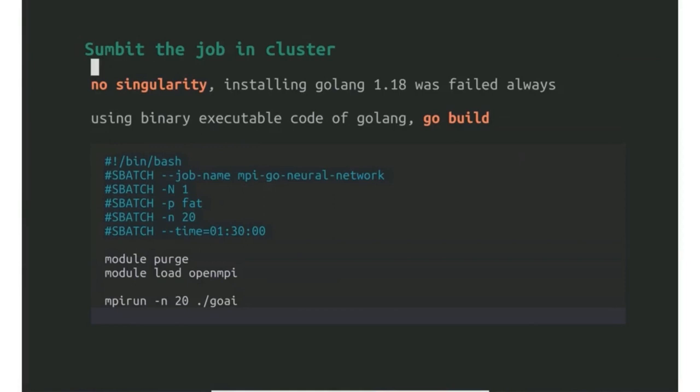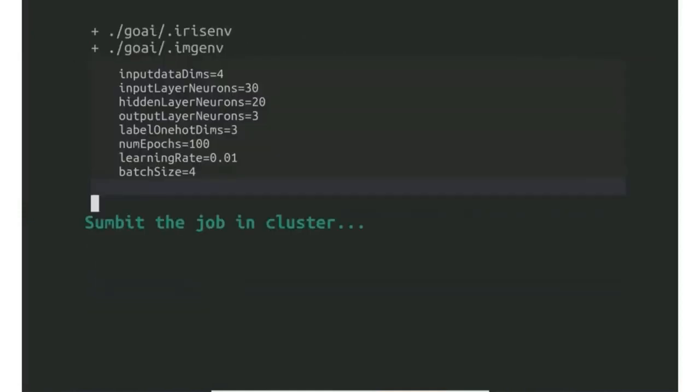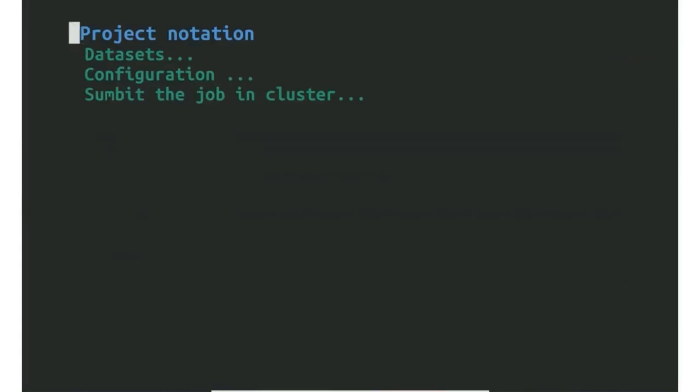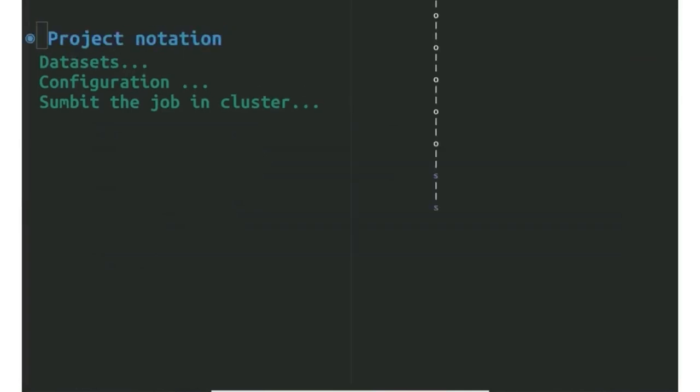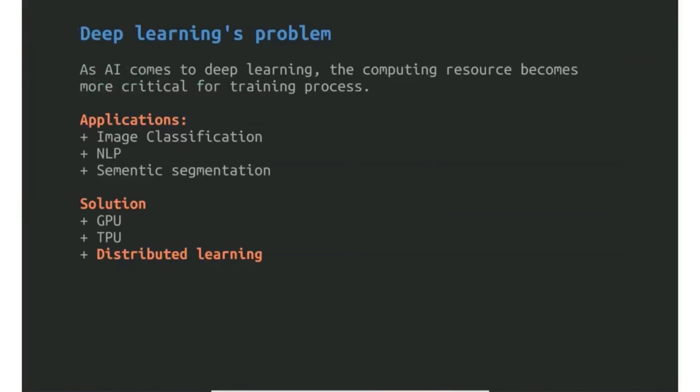This model runs not with singularity as I mentioned before, because there's some problem installing Go 1.8 in singularity. But I can still use the binary executable code with the Go build. This gives us a chance to directly execute in our cluster like this. I think you are familiar with this project application.